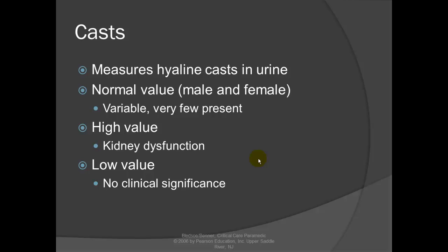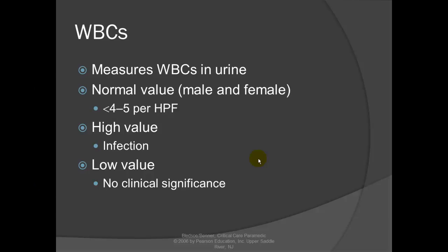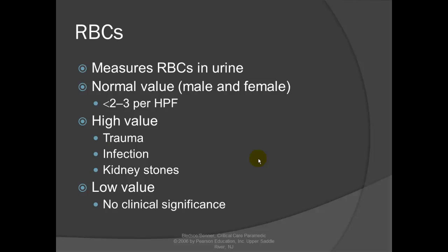Casts: measures hyaline casts in the urine. Normal value is variable — a few may normally be present. A high value indicates kidney dysfunction. Low value has no clinical significance. White blood cells: measures white blood cells in the urine. Red blood cells: normal value is less than 2 to 3 per high-powered field. A high value suggests trauma, infection, or possibly a kidney stone. Low value has no clinical significance.